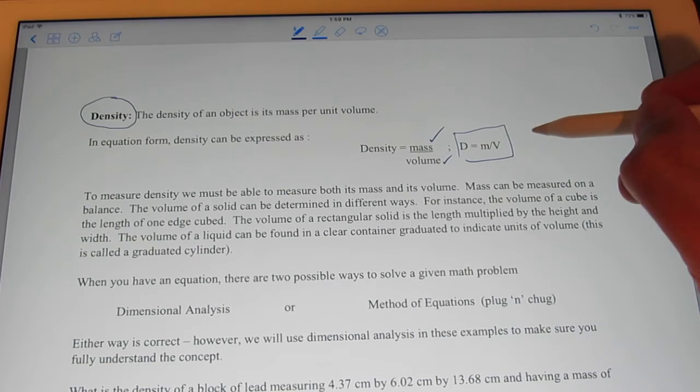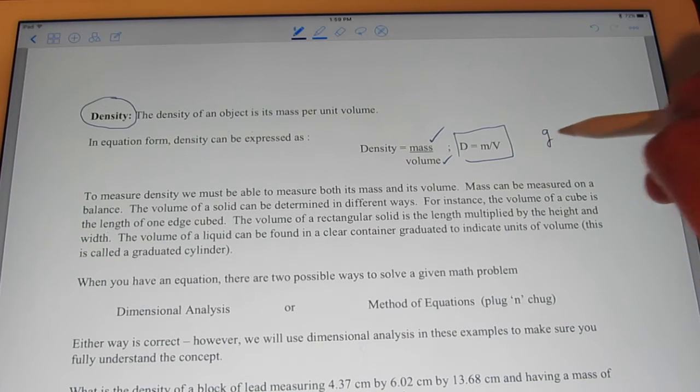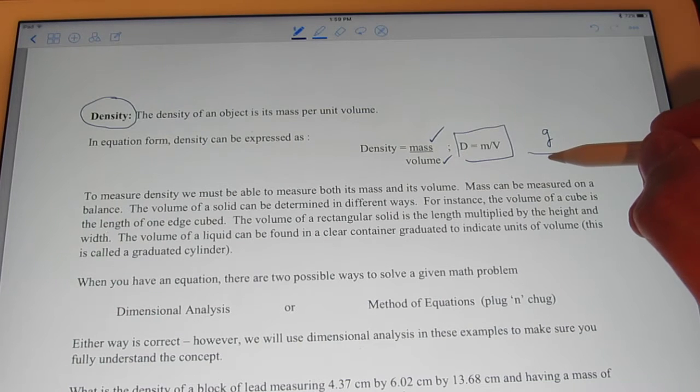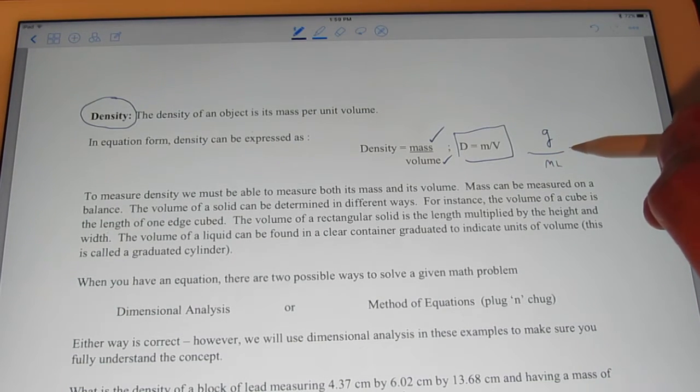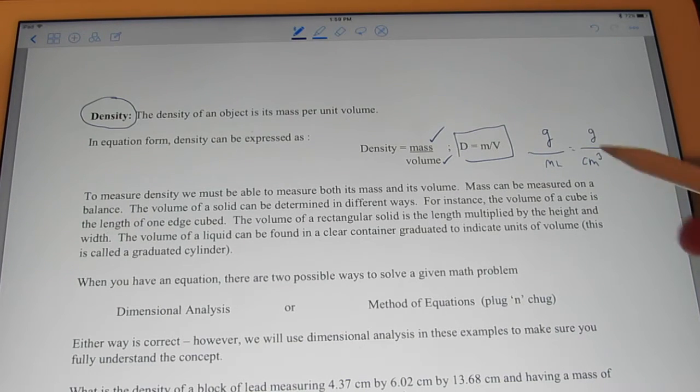In chemistry, we like to measure mass in the unit gram, and we like to measure the unit volume in milliliters. But remember, isn't a gram per milliliter the same as a gram per cubic centimeter? They're the same thing, milliliters and cubic centimeters. Remember?